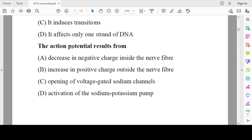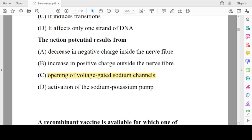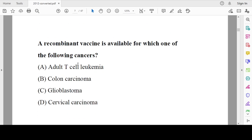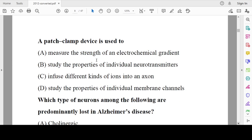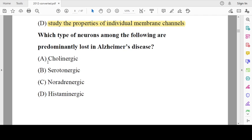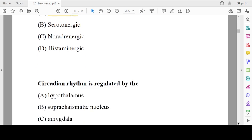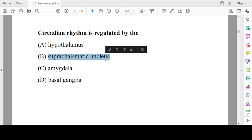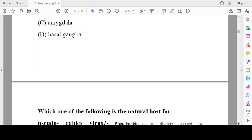An action potential results from when voltage-gated sodium channels open. A recombinant vaccine is available for cervical carcinoma; the vaccine name is Gardasil, approved by the U.S. Patch clamp technique is used for studying individual membrane channels. Which type of neurons are lost in Alzheimer's disease? Cholinergic neurons. In Parkinson's, another neuron will be affected. Circadian rhythm is regulated by the suprachiasmatic nucleus. This region is involved in regulating your sleep and wake cycle.